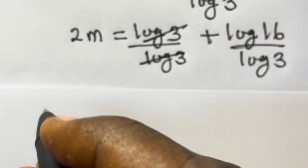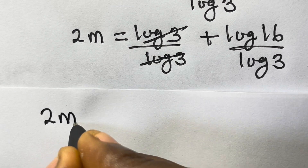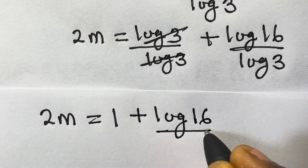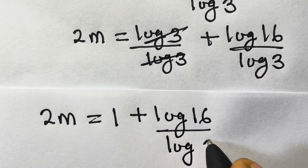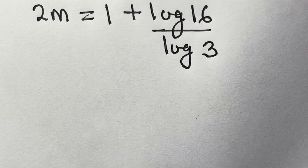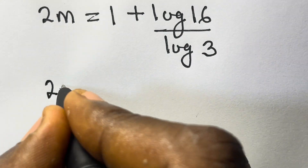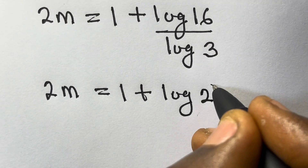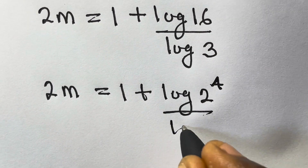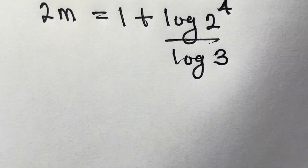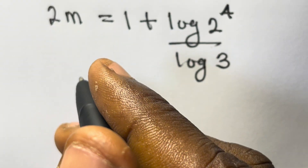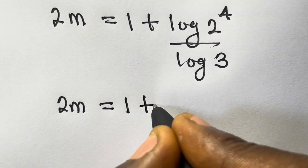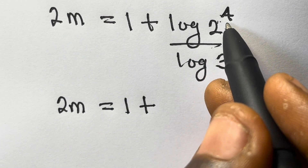Splitting the fraction, we have 2m equals log 3 divided by log 3 plus log 16 divided by log 3. The log 3 over log 3 cancels to give 1, so we have 2m equals 1 plus log 16 divided by log 3.